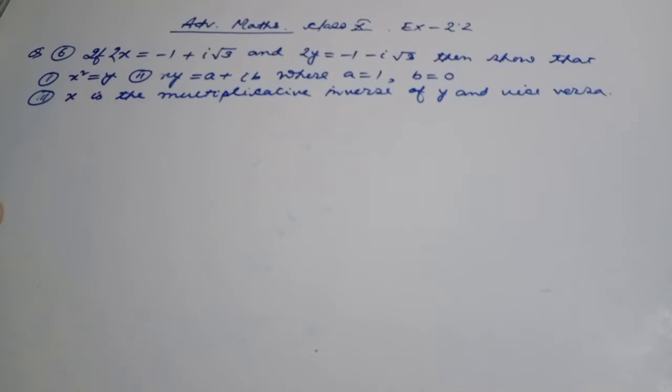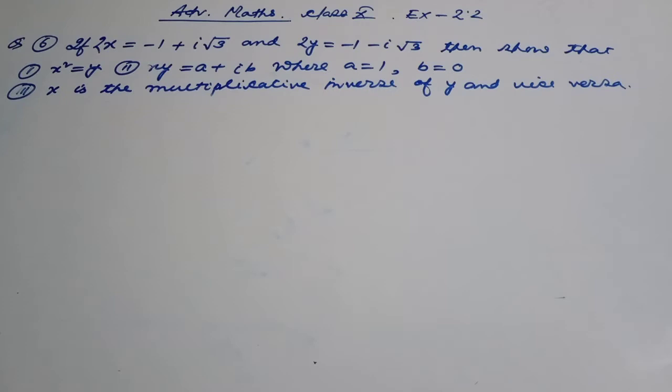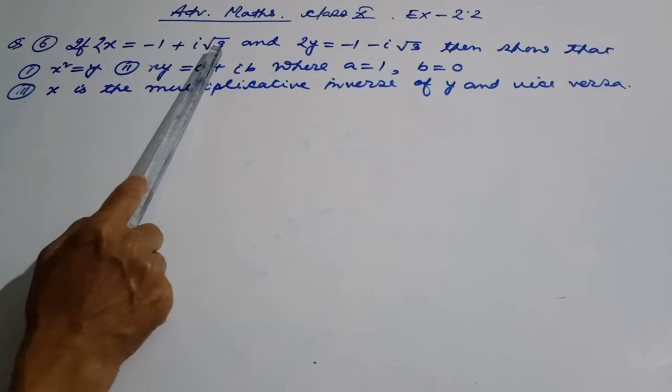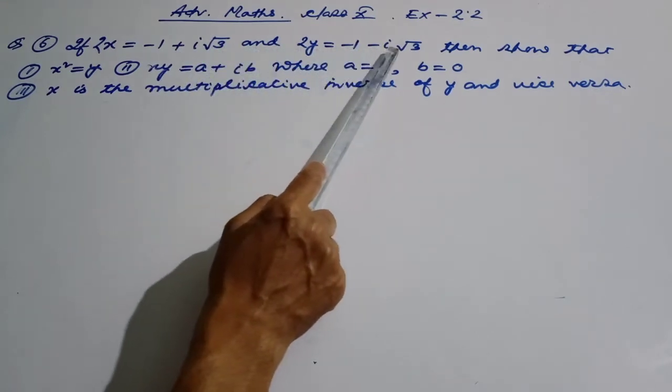Today I am question number 6. Question number 6 is x equal to minus 1 plus i root 3, and 2y is equal to minus 1 minus i root 3.